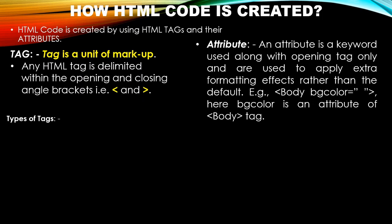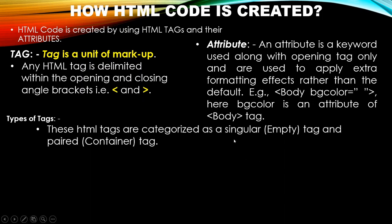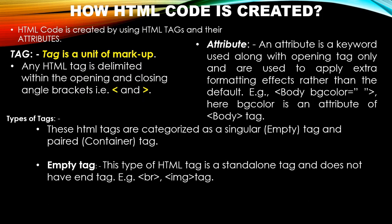There are two types of tags in HTML. The first is the singular tag, also called the empty tag. The second is the paired tag, also called the container tag. An empty tag is a standalone tag which does not have any closing tag — examples include the BR tag and IMG tag. There are multiple empty tags available in HTML.